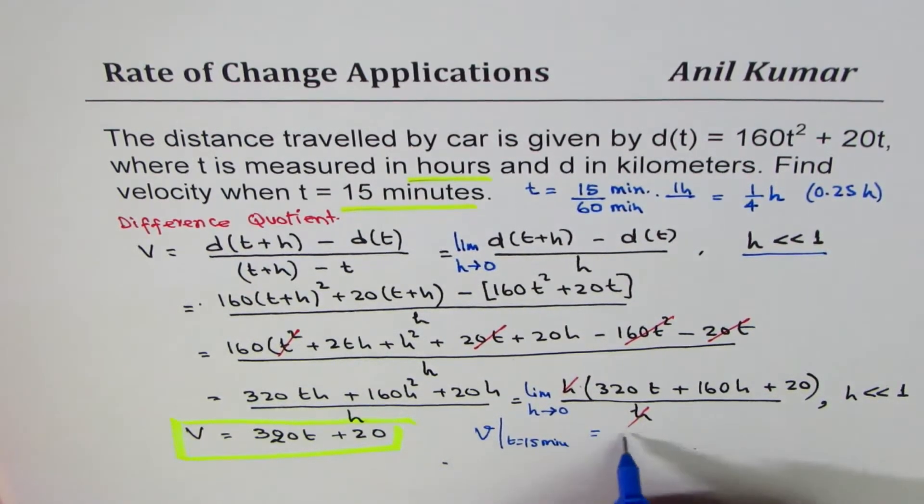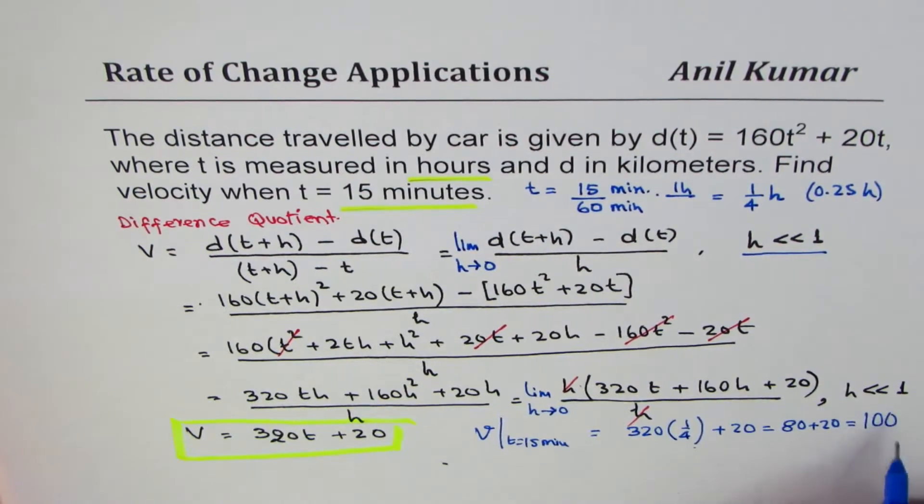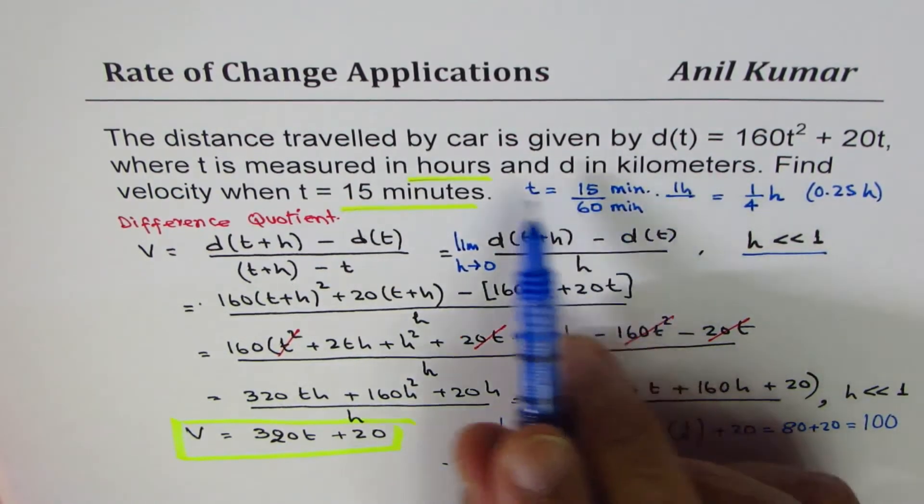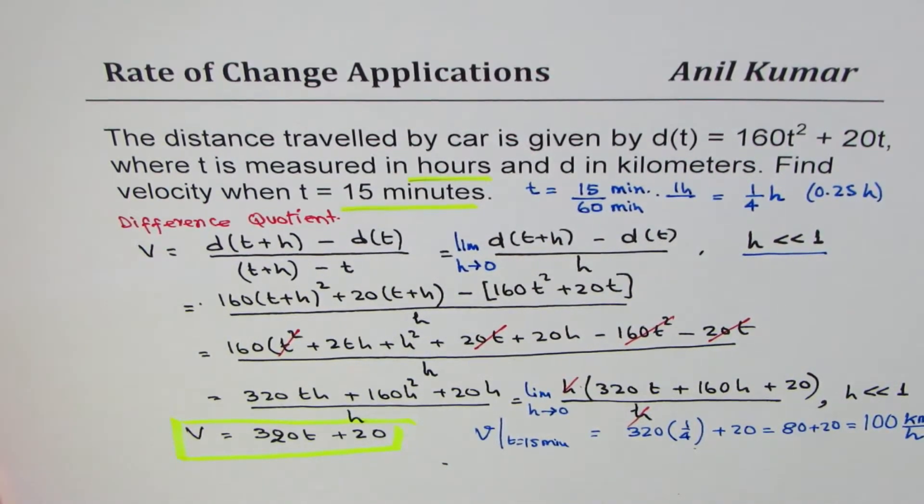Is equal to 320 times 1/4 plus 20. 1/4 of this is 80, so 80 + 20 which is 100. Units are kilometers per hour. So any word problem you have to include units in your solution. So that is the answer for us.